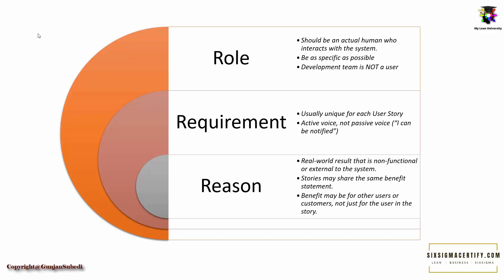About the reason: the reason should be the real-world result that is non-functional or external to the system. Stories may share the same benefit statement, but one most important thing is that the benefit may be for other users or customers and not just for the user in the story. So it may be beneficial for many other people, not just the one who is the user of the story.